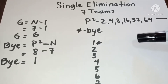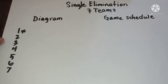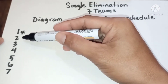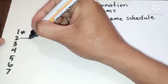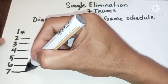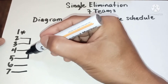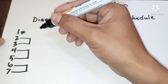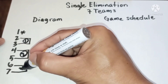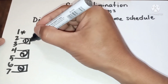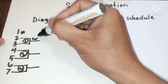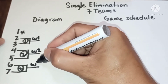Now let's proceed to the diagram and game schedule. Since we have one bye in seven teams, the rest of the competing teams will be playing in the first round. From the top, the game numbers are: game one, game two, game three. The results from the top are: winner one, winner two, winner three.